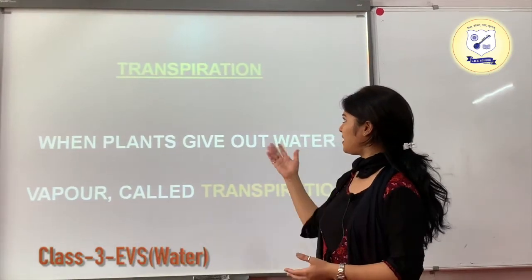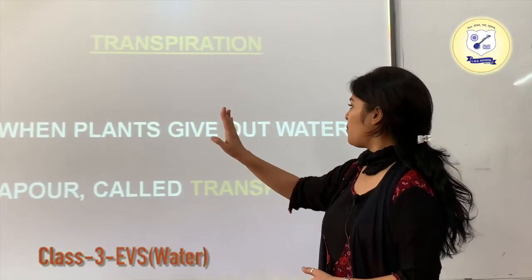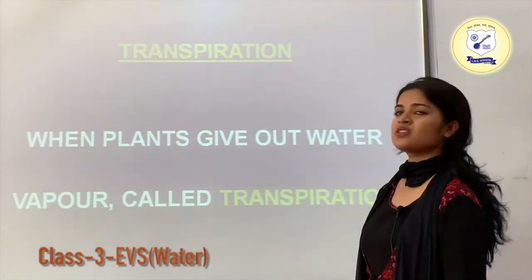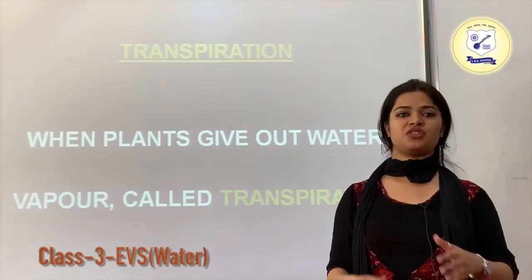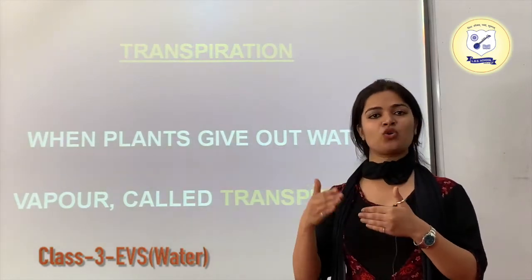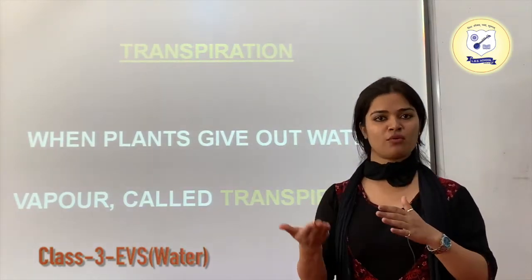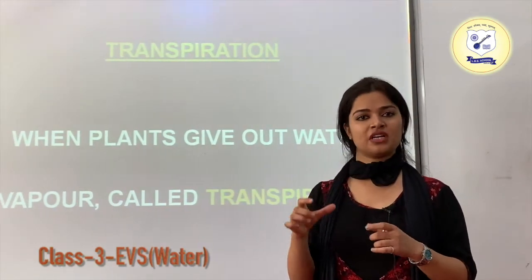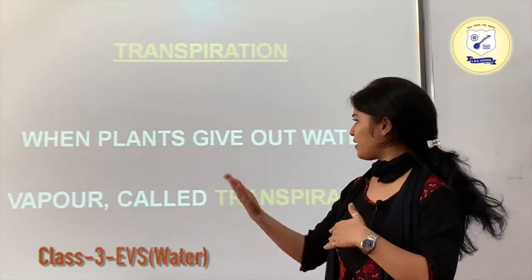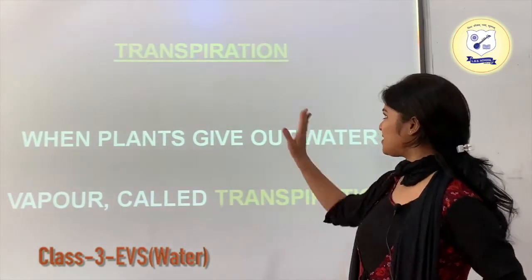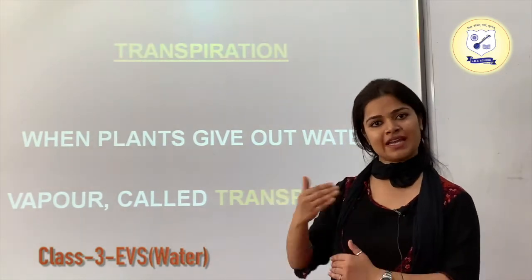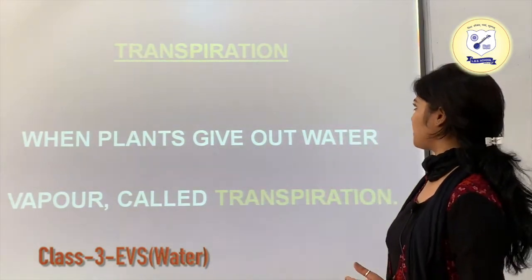The next topic is transpiration. When plants give out water vapours, that is called transpiration. The water evaporates and gets out through small pores present on the leaf. The process by which water from the plant exits through these pores is known as transpiration.